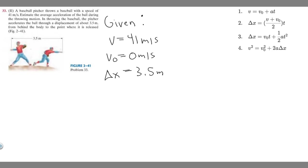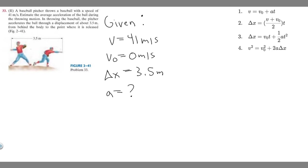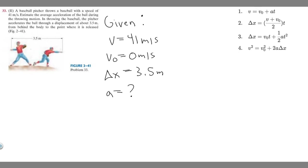The problem is asking us for the average acceleration, so we're trying to solve for a. Here we have the kinematic equations, which we use to solve for equations with constant acceleration. Keep in mind we're not given time, and all three of the top equations contain time, so we can't use those. We're going to have to use the fourth one to solve.